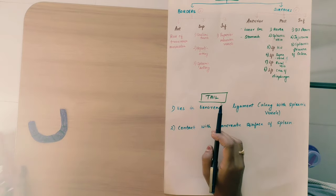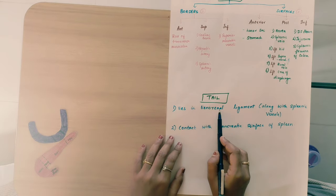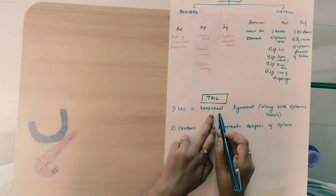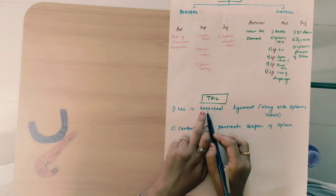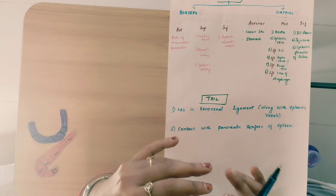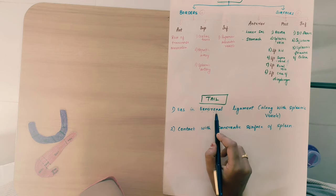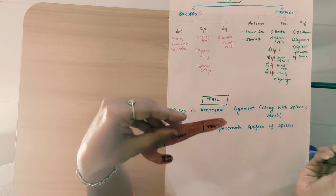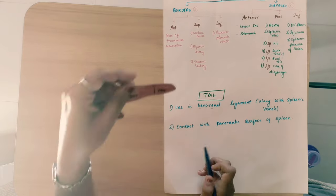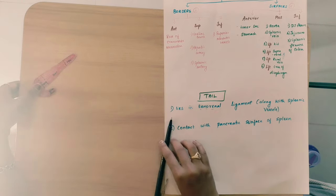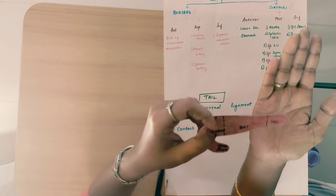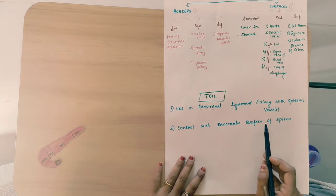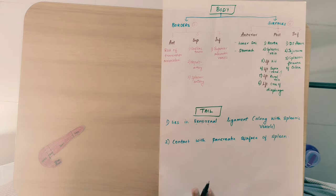Coming to the last part of the pancreas — the tail. The tail lies in the lienorenal ligament along with the splenic vessels. 'Lieno' refers to spleen and 'renal' refers to kidney, so the lienorenal ligament is a peritoneal fold between the spleen and kidney. The tail lies in this ligament and is in contact with the pancreatic surface of the spleen. The spleen has an anterior surface also called the pancreatic surface, so the tail is in contact with the pancreatic surface of the spleen.